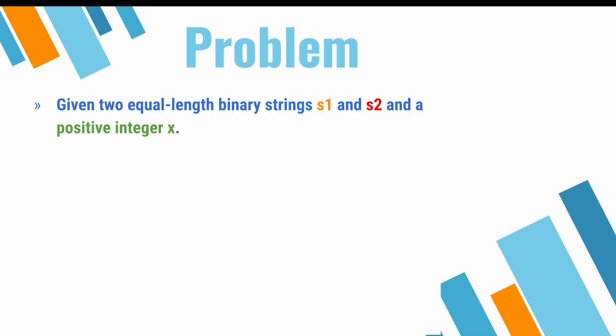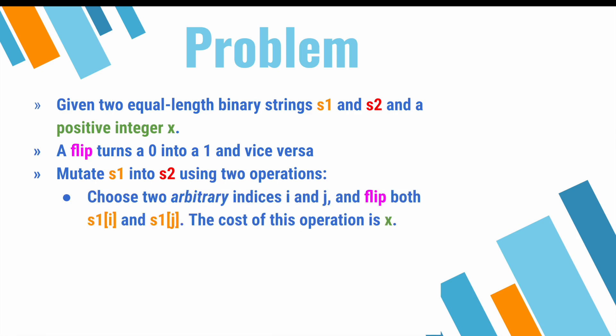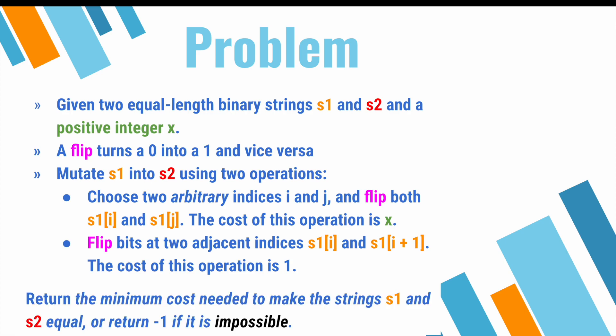Here's the problem. We're given two equal-length binary strings s1 and s2 and a positive integer x. A flip turns a 0 into a 1 and vice versa. We can mutate s1 into s2 using two operations: choose two arbitrary indices i and j and flip both s1[i] and s1[j] with cost x, or flip bits at two adjacent indices s1[i] and s1[i+1] with cost 1. Return the minimum cost needed to make the strings s1 and s2 equal, or return -1 if it's impossible.